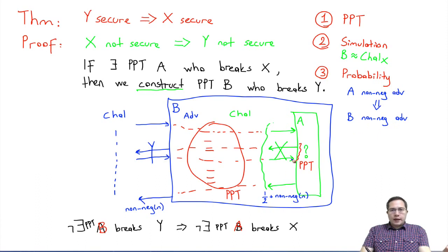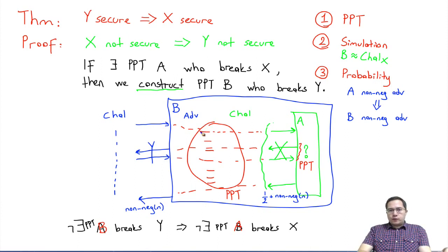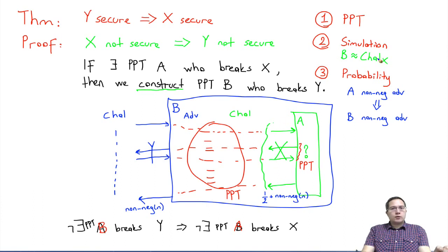A wins the game for X; B is going to win the game for Y. For every reduction, first you provide this code and then you analyze these three points: show that everything you do is PPT, show that B is indeed simulating the challenger for scheme X for the adversary, and show that in terms of winning probabilities, if A wins its game, B wins its game.